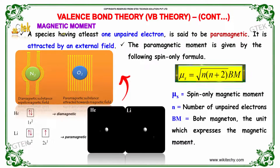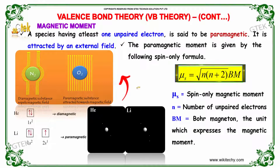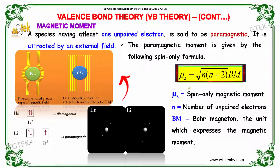A species having at least one unpaired electron is said to be paramagnetic. It is attracted by an external field. The paramagnetic moment is given by the spin-only formula: mu s equals the square root of n(n+2) Bohr magnetons, where mu s is the spin-only magnetic moment and n is the number of unpaired electrons.